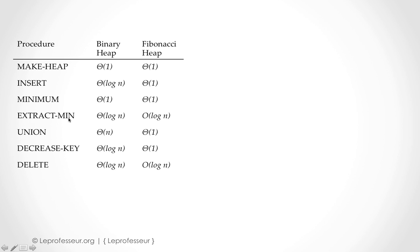Similarly there are other operations: extract min, union, decrease key, and delete key. If we see the worst case complexity for these operations, we find them in the order of O(log n) for binary heap. Compared to the amortized analysis for Fibonacci heaps, we also find O(log n) for those operations, and for union it's O(n) for binary heap versus Θ(1) for Fibonacci heaps.